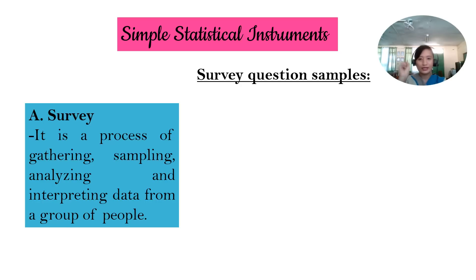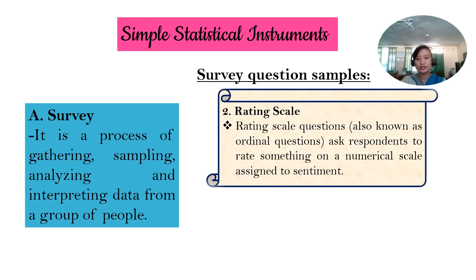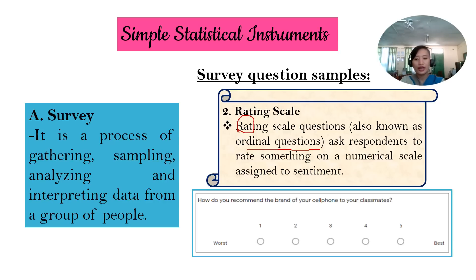Now, that is the first one. Let's continue to number two, which is a rating scale. A rating scale or rating scale questions, also known as ordinal questions, ask respondents to rate something on a numerical scale assigned to sentiment. From the word rate, you are going to rate, for example, how do you recommend a brand of your cell phone to your classmates? One being the worst and five being the best. So you're just going to rate. If it is worst, you select one. But if it's best, or you like your phone, you recommend it, so you select five.